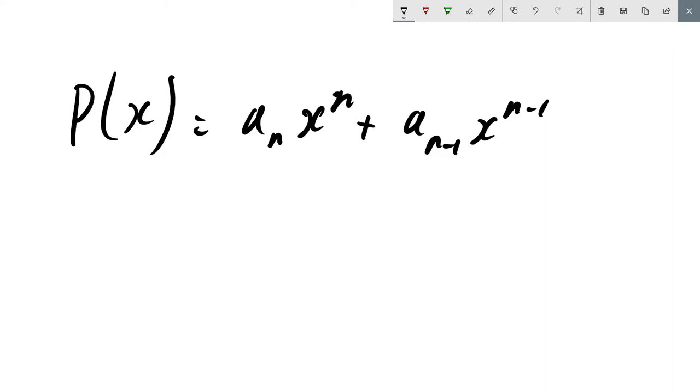To put it more generally, a polynomial function is something that can be written like this: a subscript n times x to the n plus a n minus 1 times x to the n minus 1.